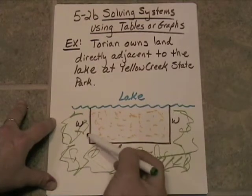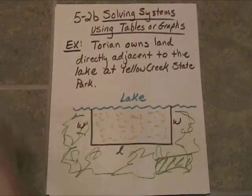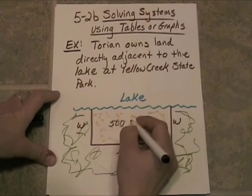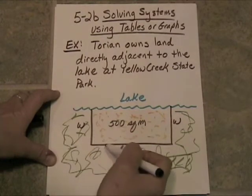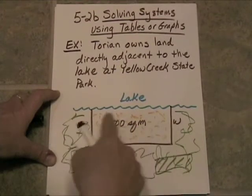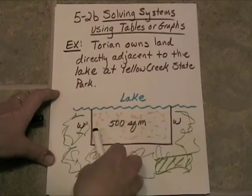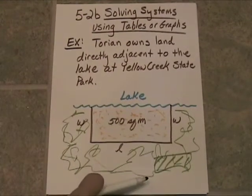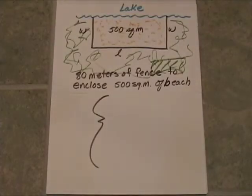This is the area that she wants to fence in. She wants it to be at least 500 square meters. Let's write that in. This has to be 500 square meters. And she's only got 80 meters of fencing to go around these three sides. Now, we've got two widths and we have one length. Only one length because she doesn't have to fence where the lake's going to be. She's got to be able to go into the lake.